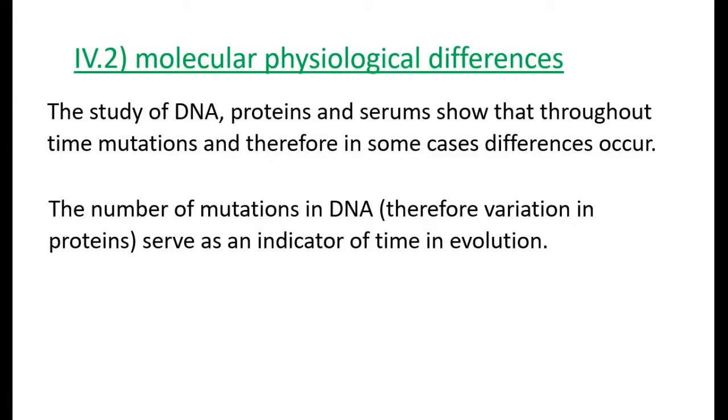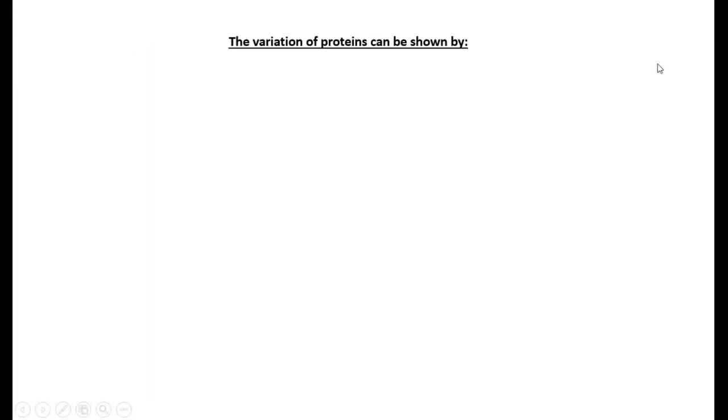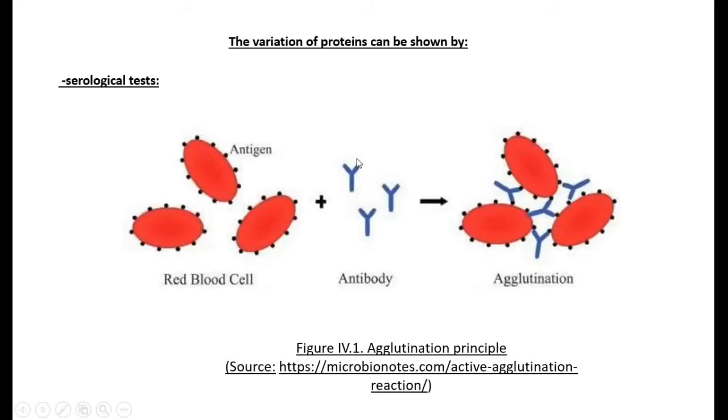Now let's have a look at how we can say and show that proteins present variations. One method is serological testing. We're just going to do the basic principle now. The basic principle is that different species will have different sets of proteins in their bloods, and you know that antibodies will bind to antigens.